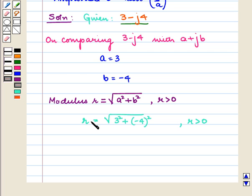This is equal to under root of 9 plus 16 which is equal to under root 25 which will be 5. So, we have r is equal to 5 as r is strictly greater than 0.